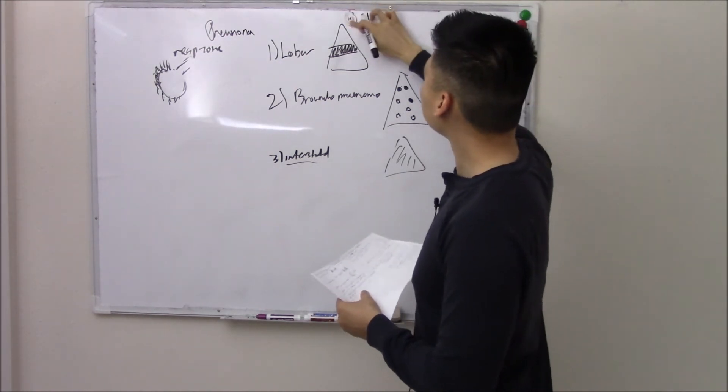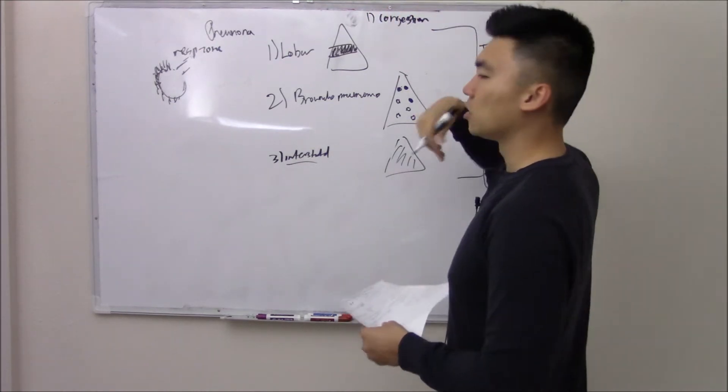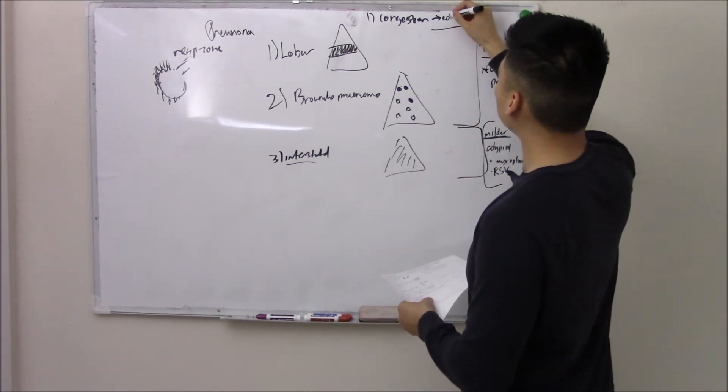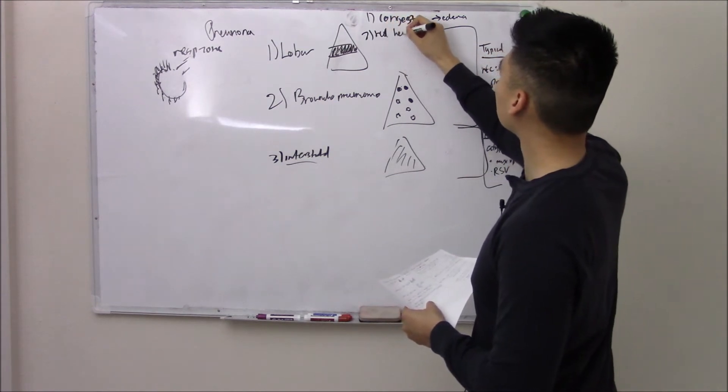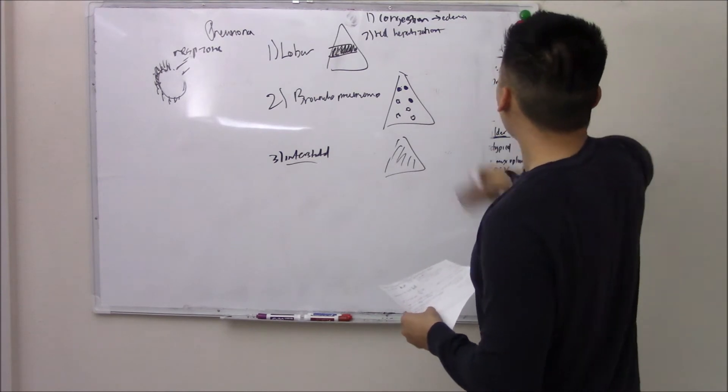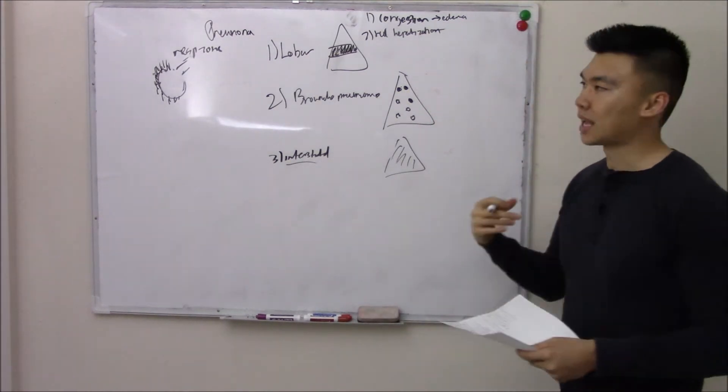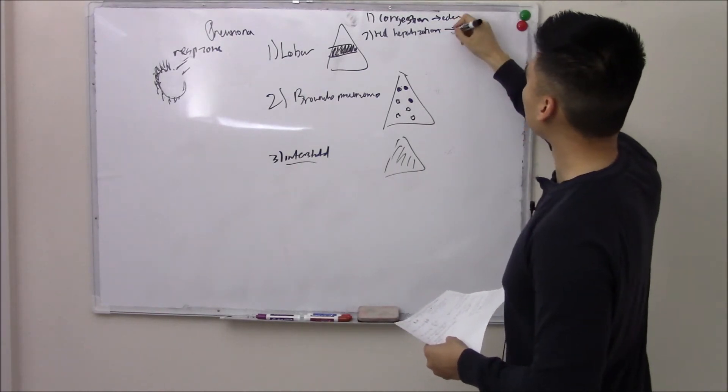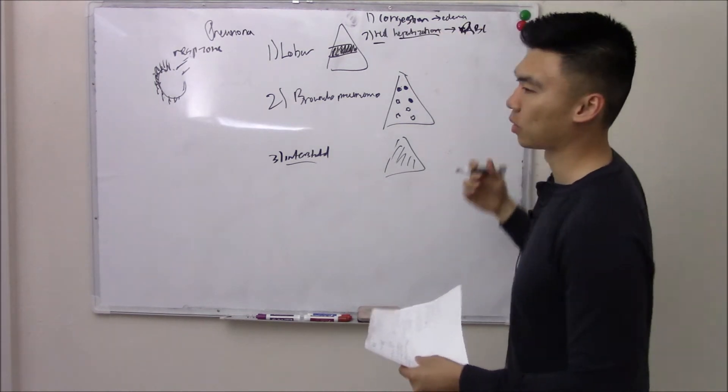The first stage is congestion and the name gives it away. You have all that inflammation. You're going to have all this edema. Second stage is red hepatization. You're going to have neutrophils come in. You're going to have red blood cells that kind of get out, extravasate into your space. So it turns red.